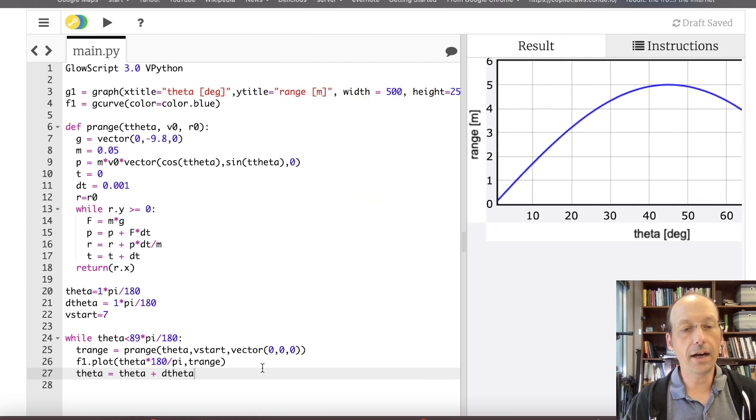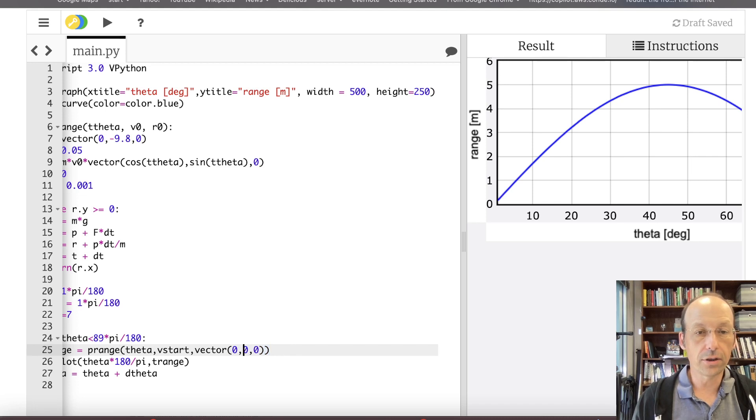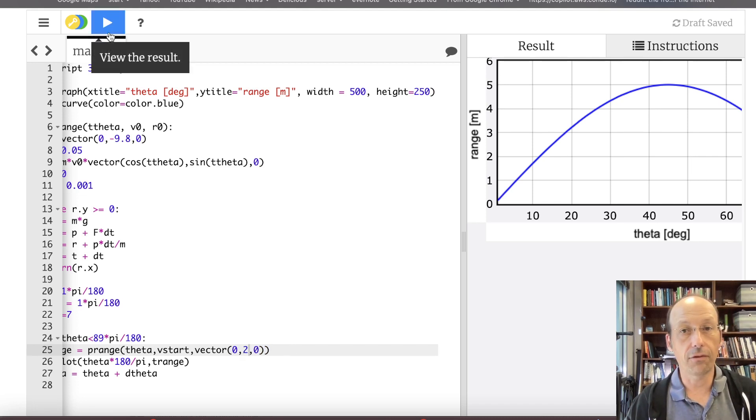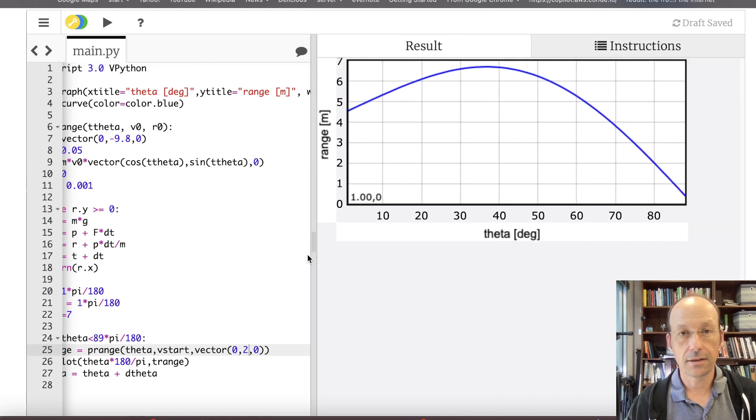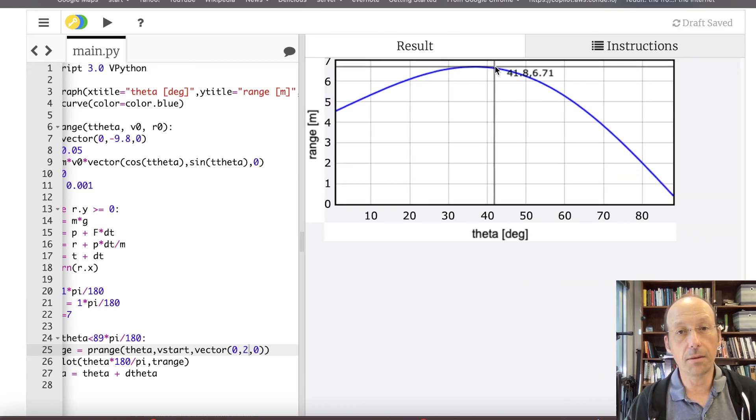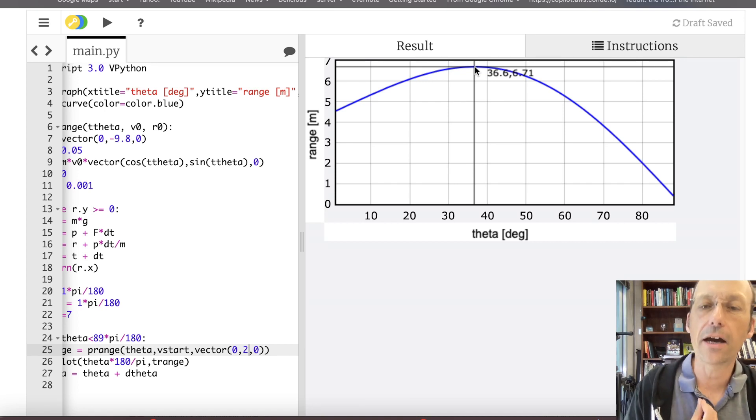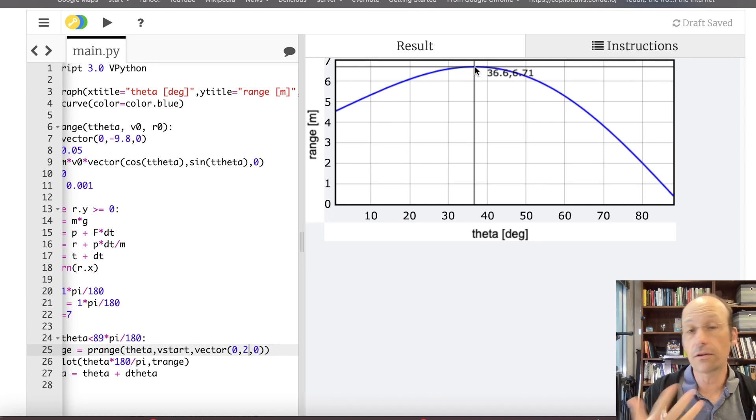Now let me just show you if I don't start at the origin and I do it again. Let's start at actually two meters high. And I run it. You'll notice that the maximum range is not 45 degrees, but 36.6 degrees. And I'm getting the value from the graph. There's a better way to do this, but I like simple. Let's start simple. Let's use the graph to find out this maximum range. There's nothing wrong with that.